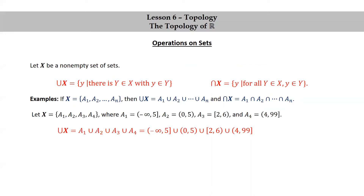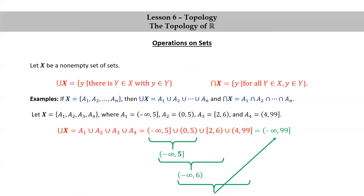Union X is A1 union A2 union A3 union A4. By associativity, we could just do two at a time going from left to right. Taking the union of negative infinity to 5 and 0 to 5 just gives us negative infinity to 5, because 0 to 5 is a subset of negative infinity to 5. Now we take the union of negative infinity to 5 with the half-open interval 2 to 6, to get negative infinity to 6. And finally we take the union of negative infinity to 6 with 4 to 99 to get the infinite closed interval negative infinity to 99.